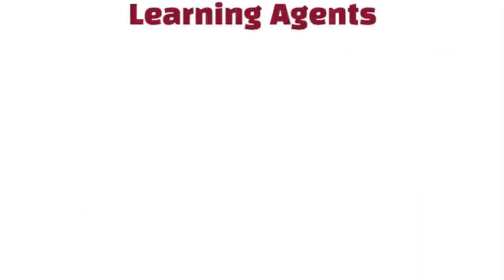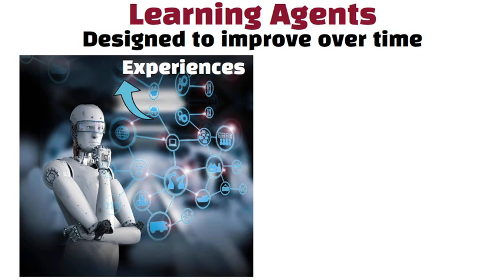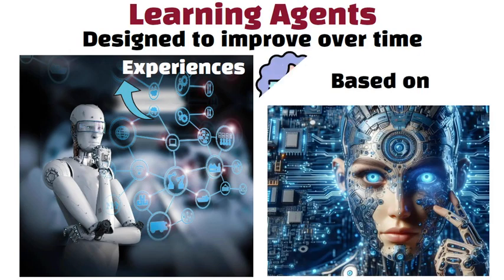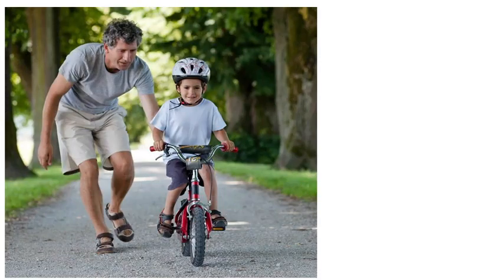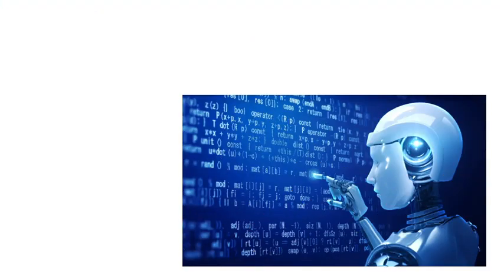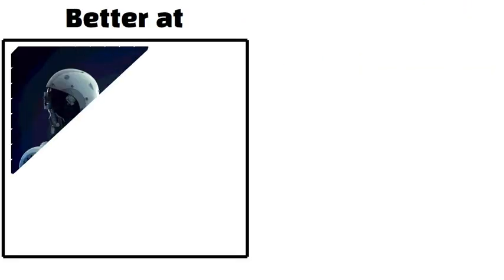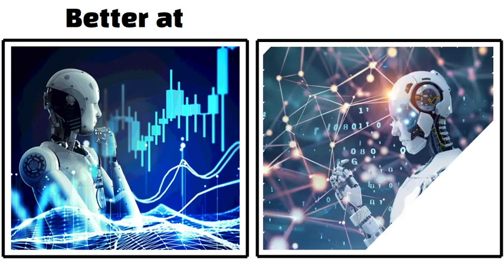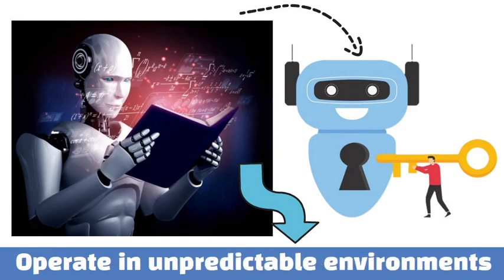Learning agents are designed to improve over time. They have the ability to learn from their experiences, adapting their behavior based on what has worked well or poorly in the past. Think of a child learning to ride a bike — each fall teaches them how to balance better next time. These agents use data from previous actions and their outcomes to update their strategies. As they learn, they become better at predicting the results of their actions and can handle new situations more effectively. Learning agents are key to developing AI that can operate in unpredictable environments.